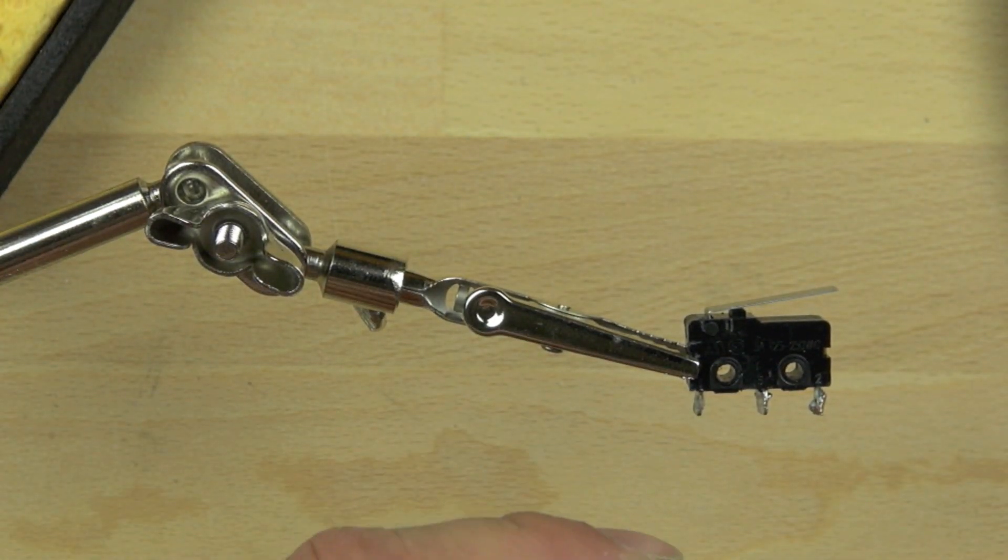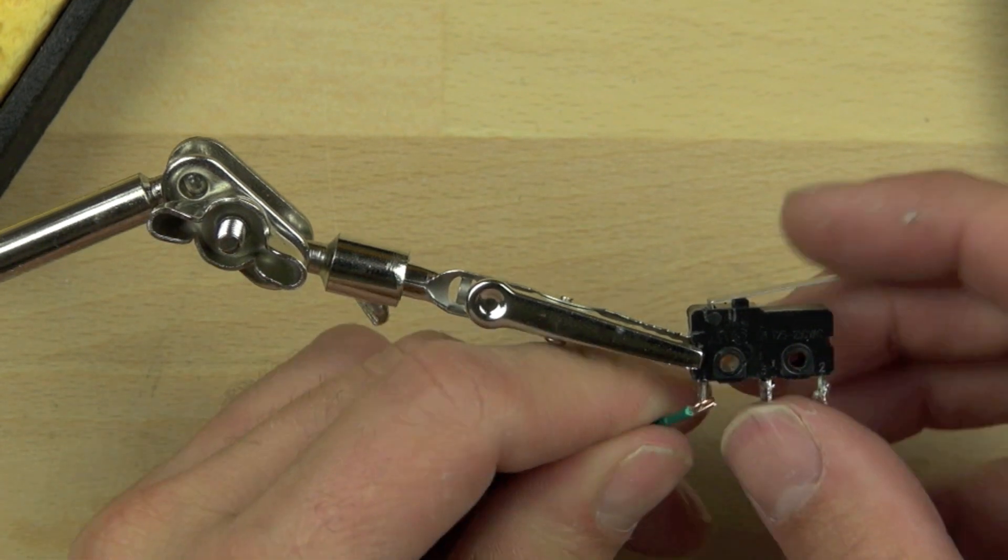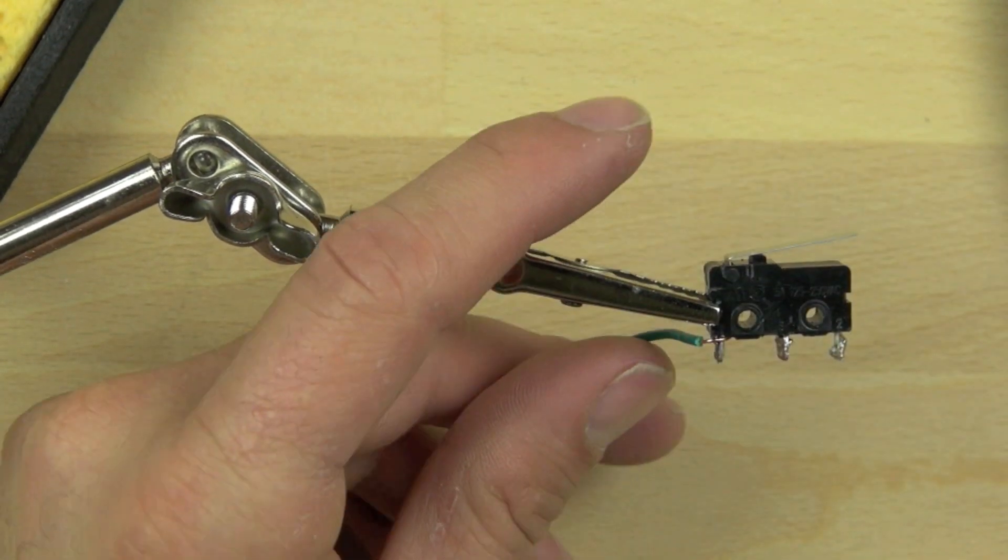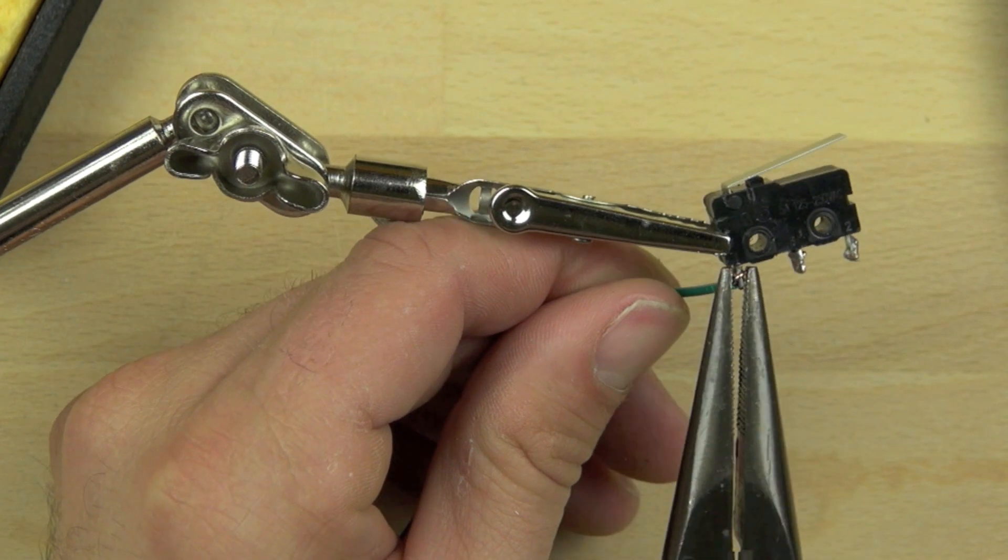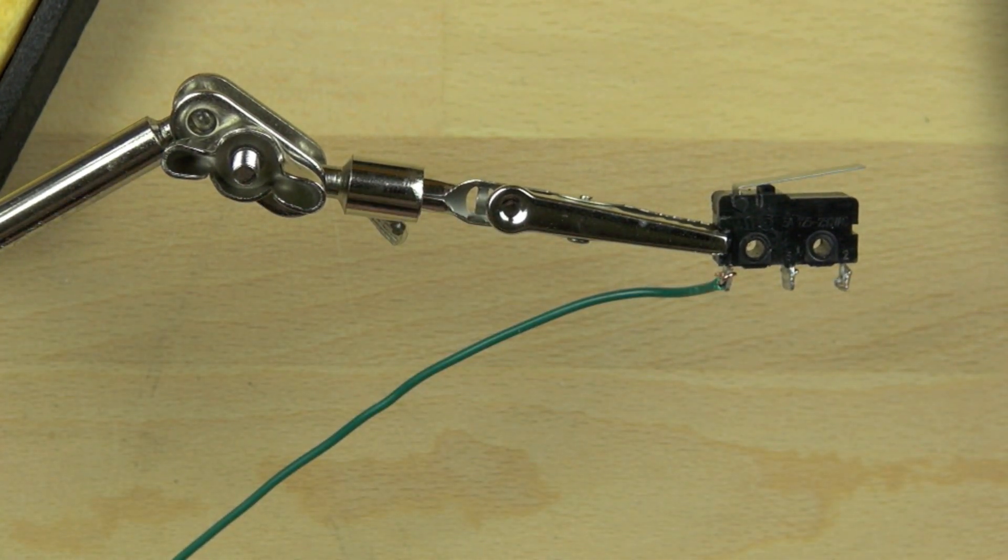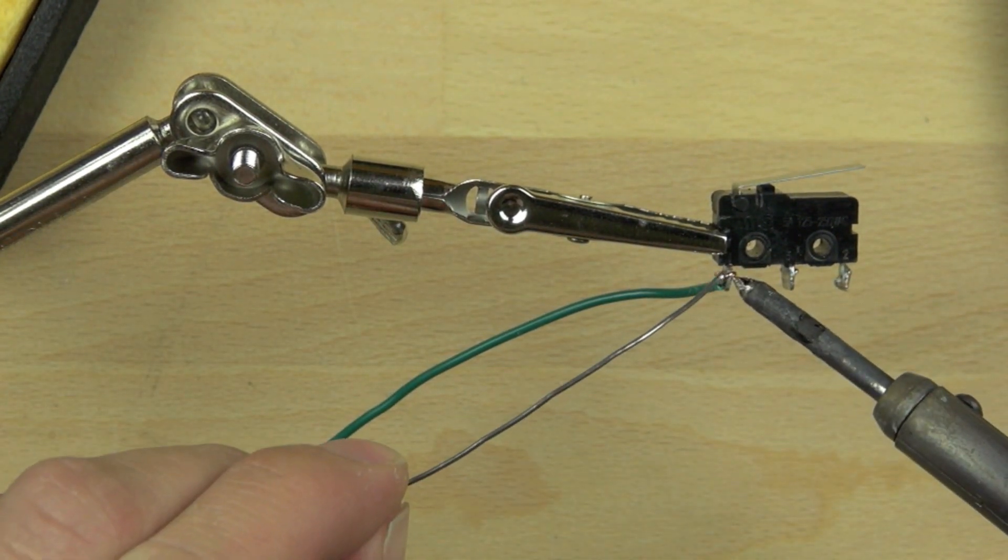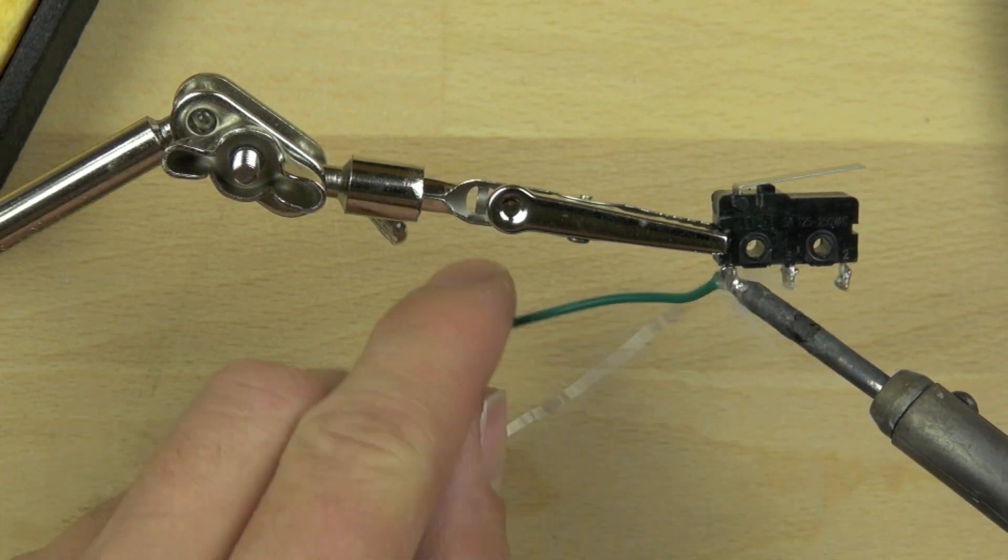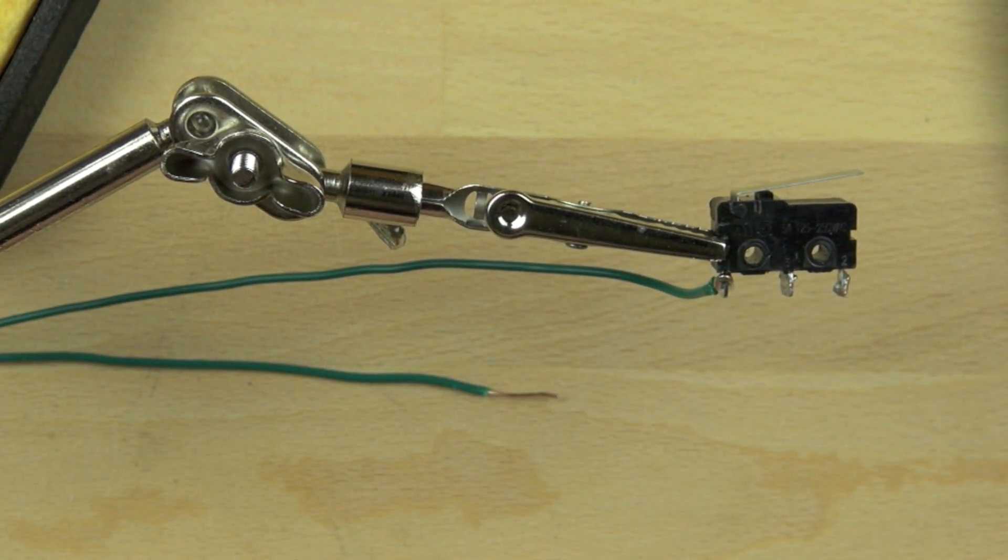We're going to solder those wires in place to make sure that they don't come out. We're going to use our needle nose plier to squeeze the wire against the connection there. I've already put some solder on those connections to make them a little easier to solder to. There we go, we've got the first wire in place.